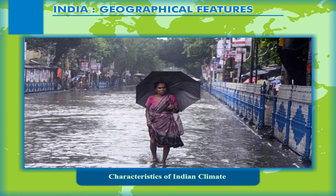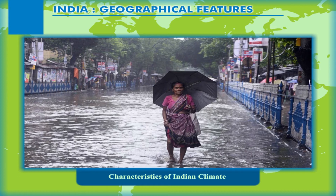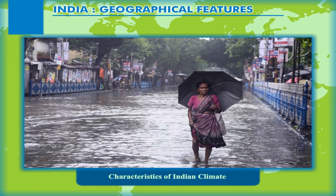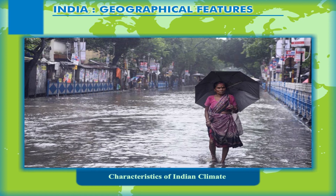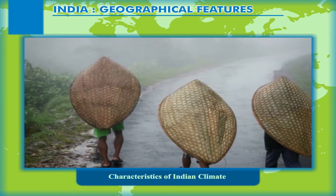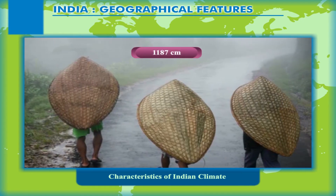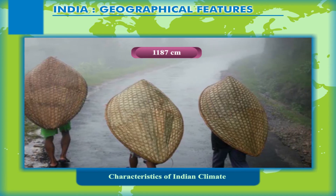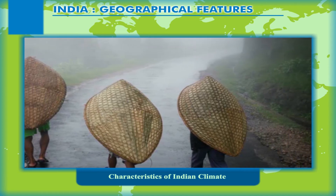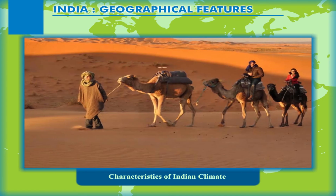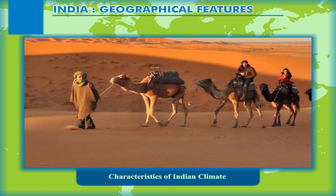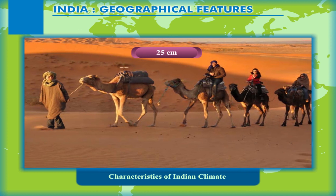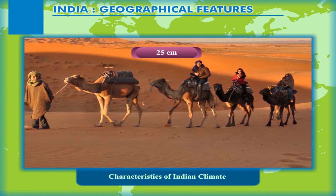Not only the form of precipitation, but also the amount of rainfall varies significantly. Mawsynram in North East India, in the state of Meghalaya, gets a high annual rainfall of about 1187 centimeters. On the other hand, Rajasthan or the Thar Desert gets an annual rainfall of less than 25 centimeters.